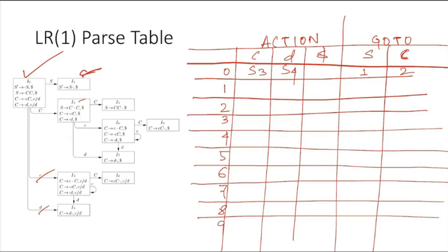At state I1, there is only one item — for dollar it goes to accept, so we write accept. Then at state I2: for capital C it goes to I5, so we put 5 here. For small c it goes to I6, so it will be shift 6. For small d it goes to I7, so it will be shift 7.